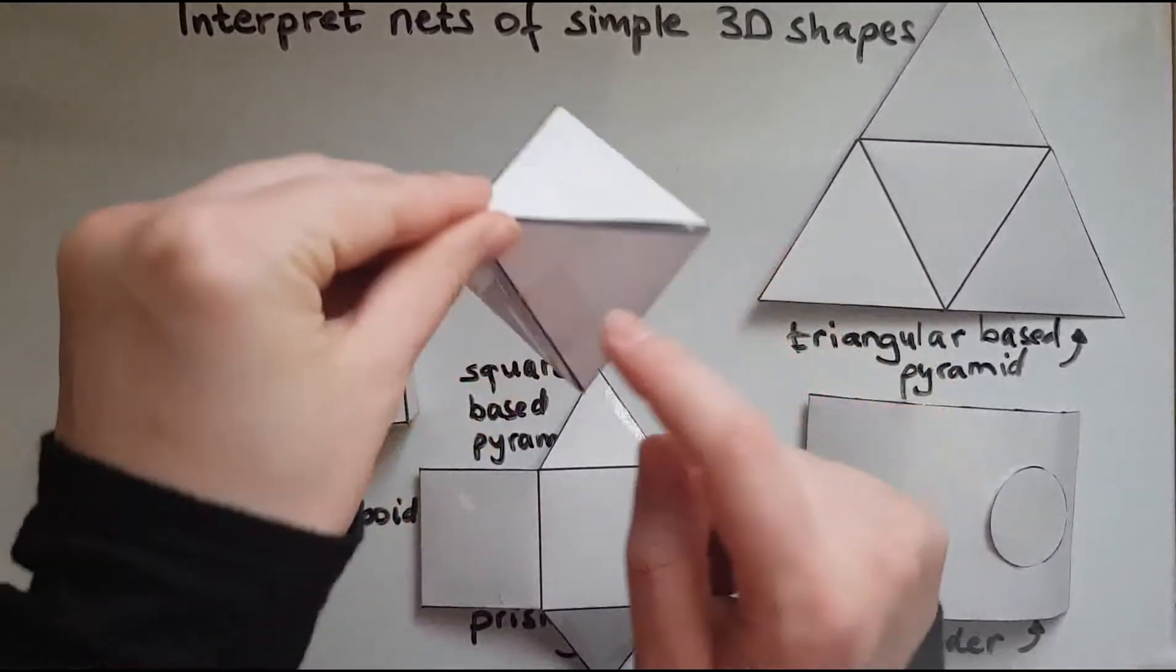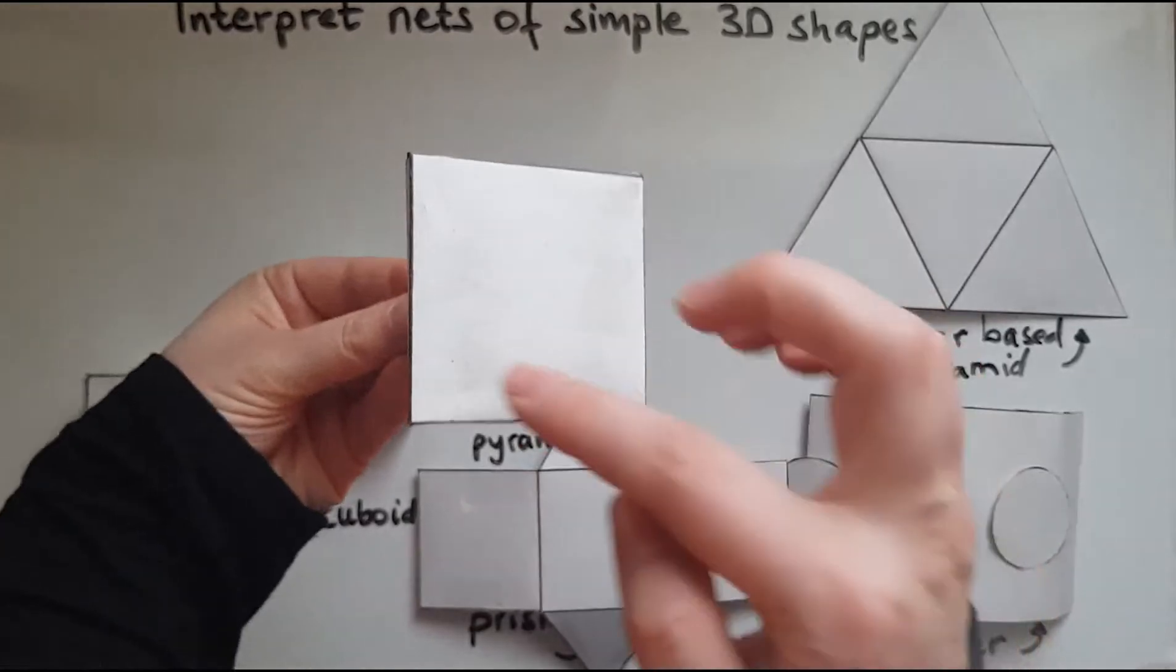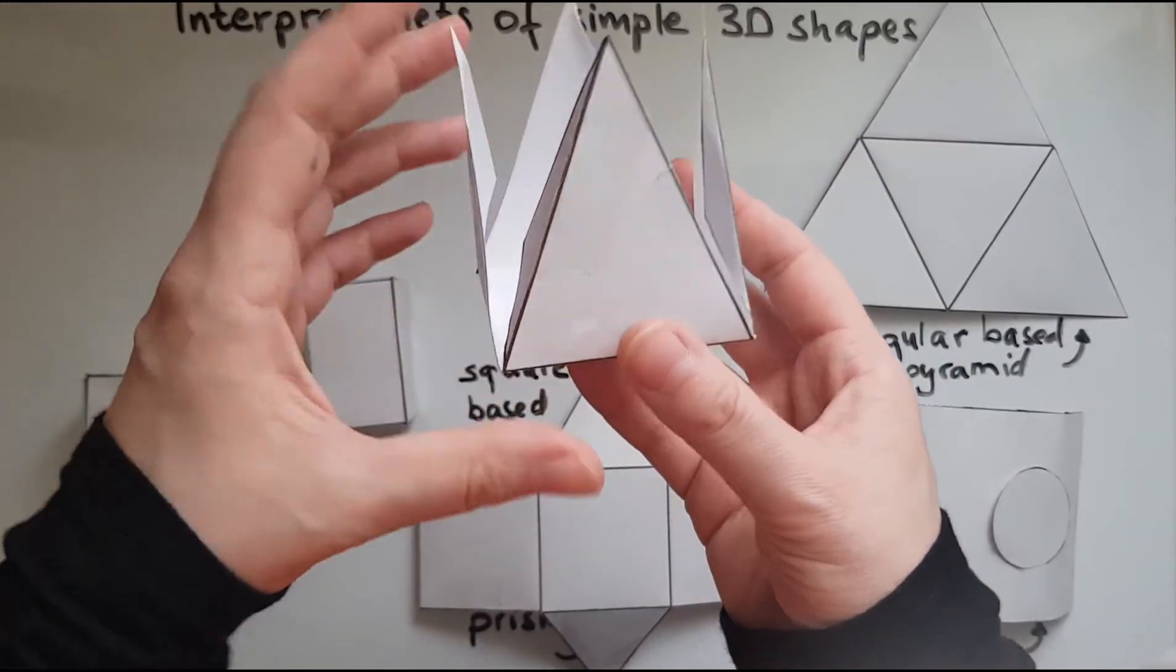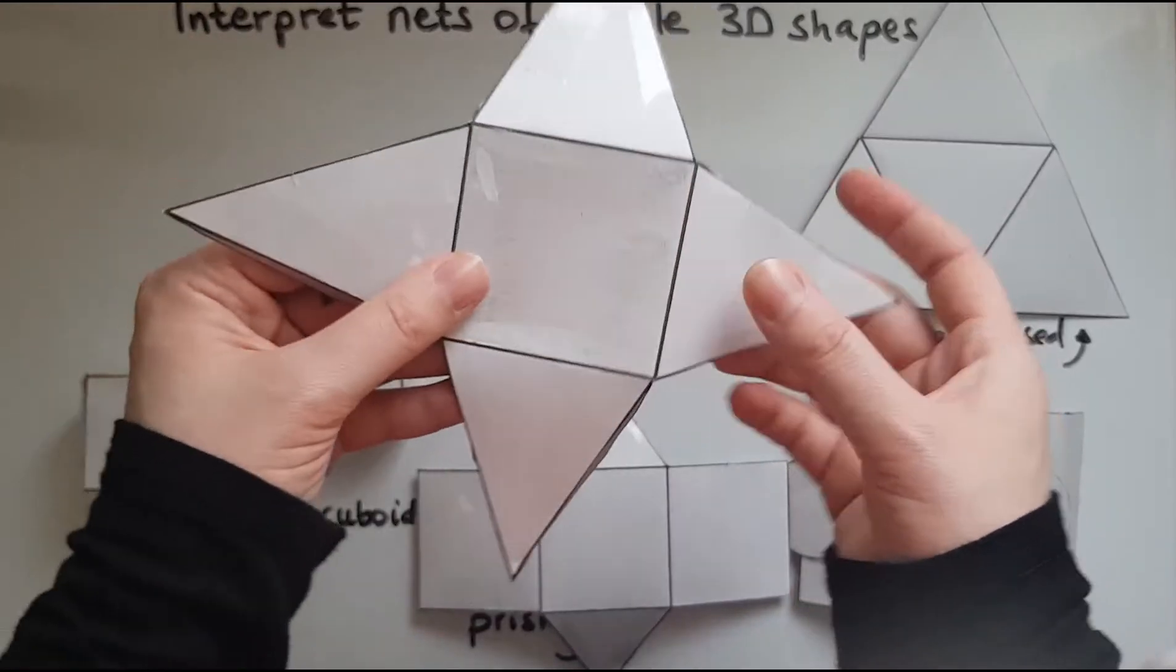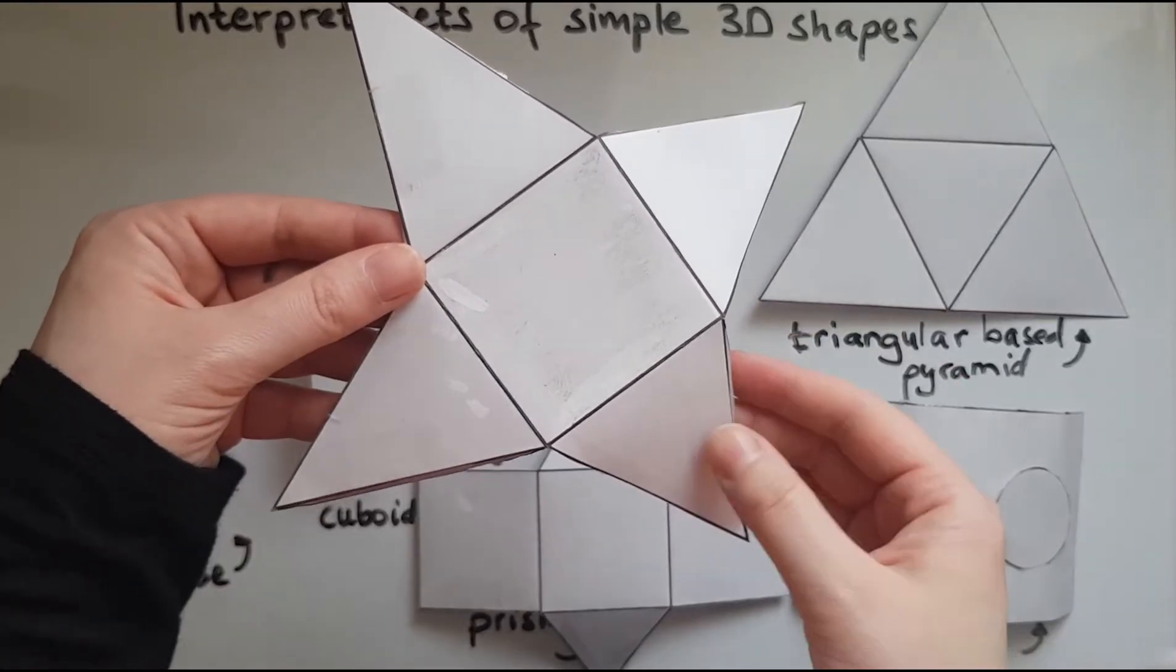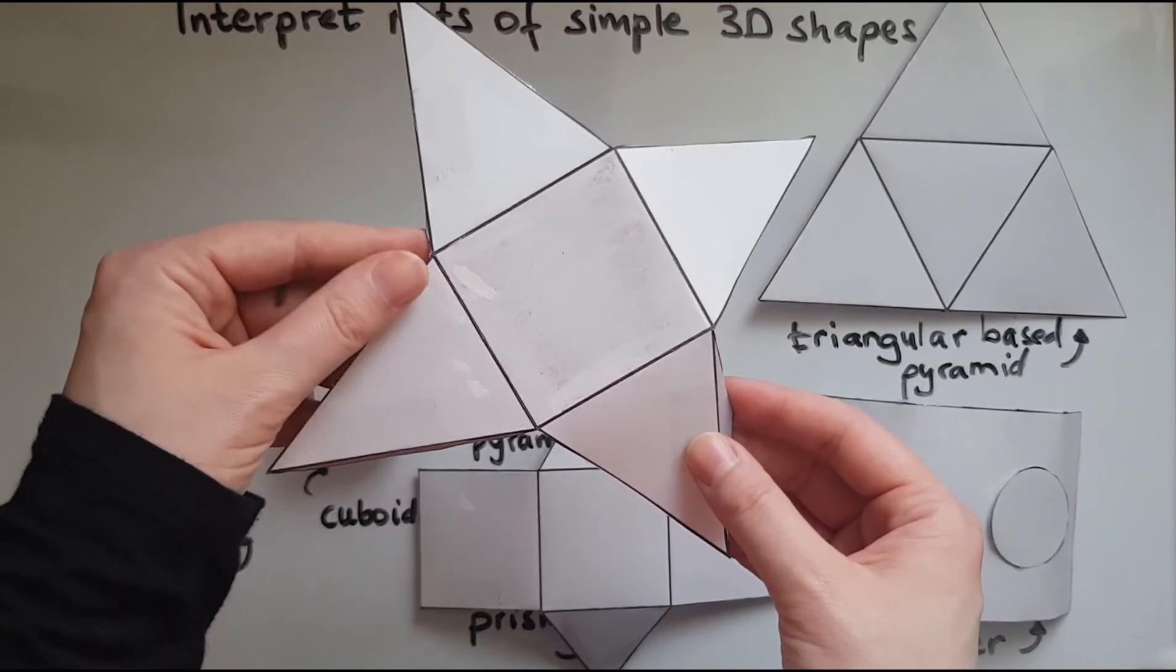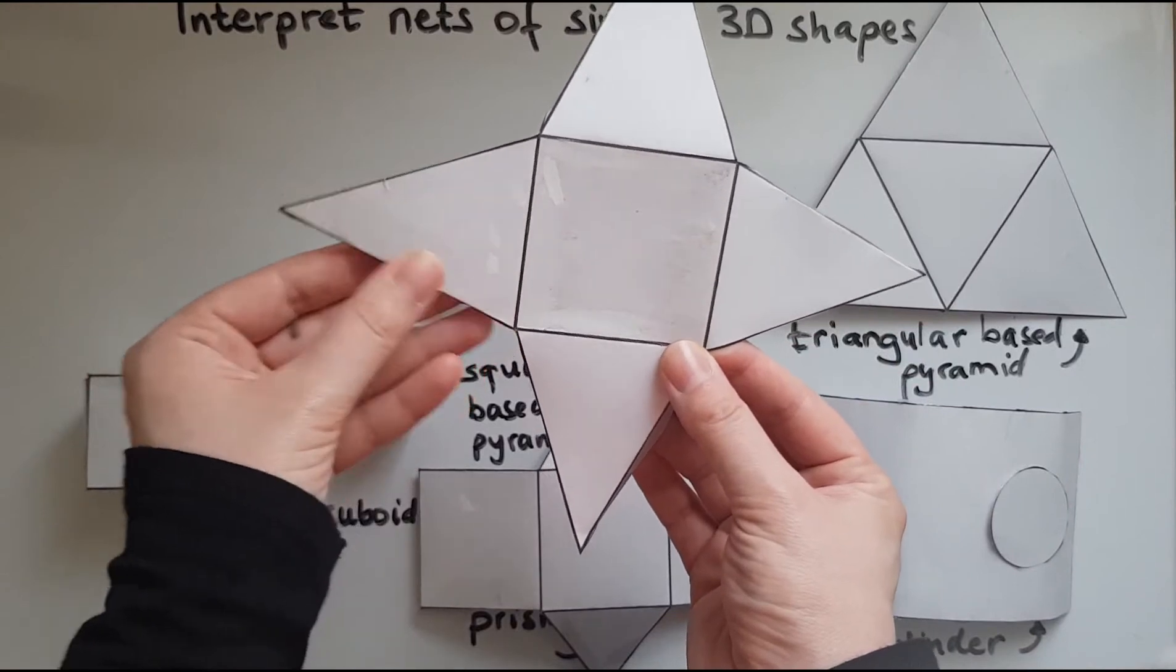So all these four triangles are the same, same size. And we have a square at the bottom. So what else could we see? How else could this net be constructed? This is the typical shape of a square-based pyramid. So this is how you'd normally see it and identify it.